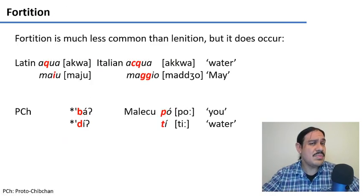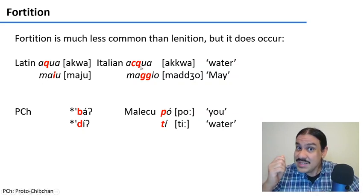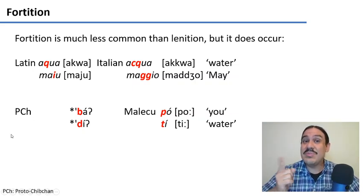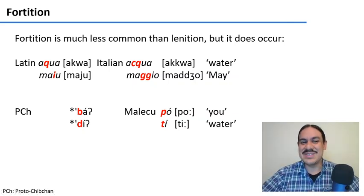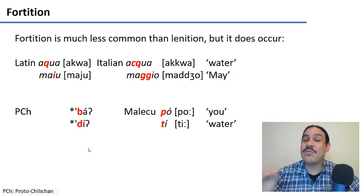The opposite can also happen, but it's much less frequent. It's called fortition. In Latin, we have the words 'aqua' and 'maio', with a simple stop and an approximant. In Italian, these became a double stop — a geminate — and a stop and an affricate. Proto-Chipchen was the mother language of Bribri, Cabécar, and Maleku. In Proto-Chipchen, the words for 'you' and 'water' were 'ba' and 'di' — voiced — and these became voiceless 'po' and 'ti' in Maleku. So voiced to voiceless: they fortified.